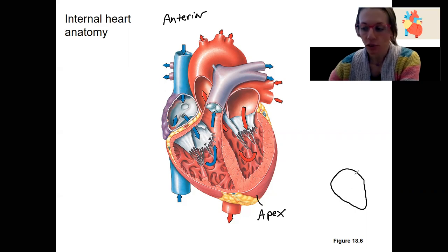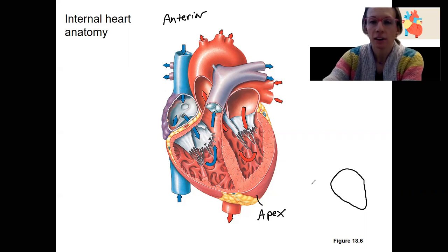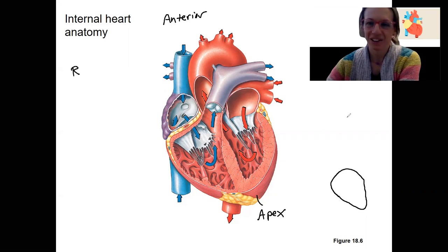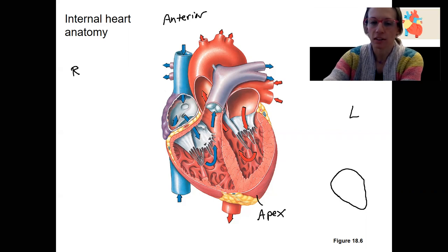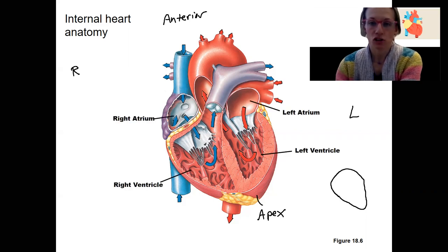So what I want to do first is name the four chambers that we've already named. Here again, we're looking at a patient. So here is their right side and here is their left side. So then you could name the four chambers, right? Got the right atrium, right ventricle, left atrium and left ventricle.